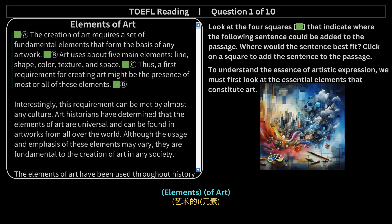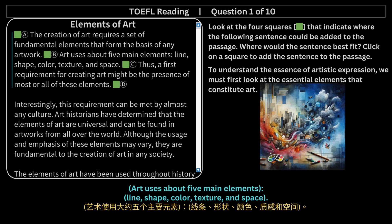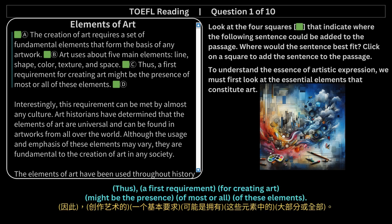Elements of Art. The creation of art requires a set of fundamental elements that form the basis of any artwork. Art uses about five main elements: line, shape, color, texture, and space. Thus, a first requirement for creating art might be the presence of most or all of these elements.